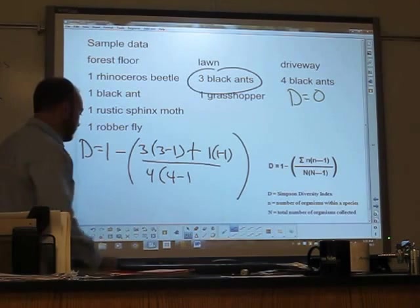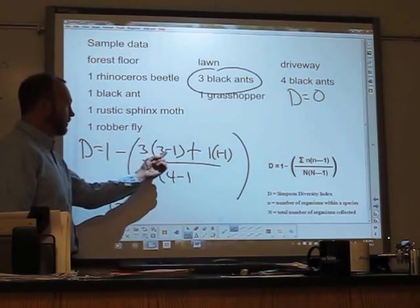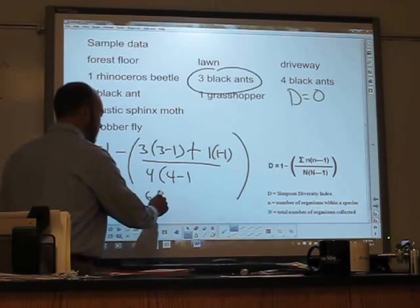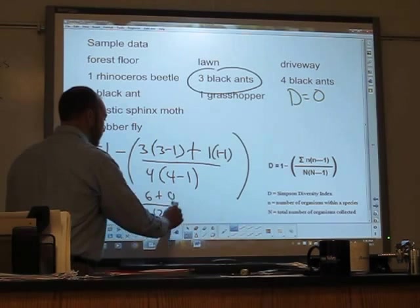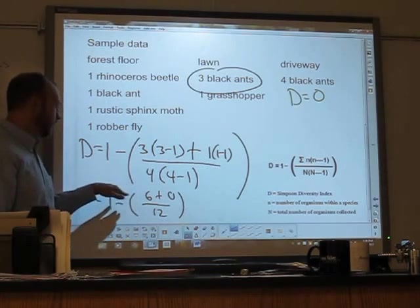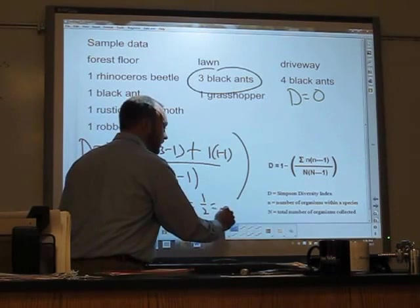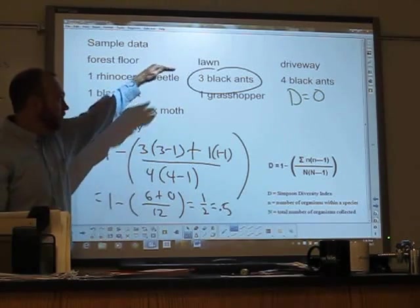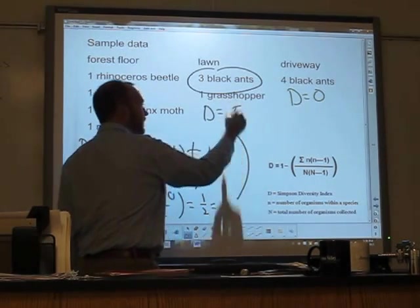Let's now calculate the numbers. So here I still have a one minus. Three times two is six. One times zero is zero. Four times three is twelve. So six over twelve is a half. So one minus a half is a half, or if I want to put that as a decimal, 0.5. So my biodiversity index for the lawn is 0.5.